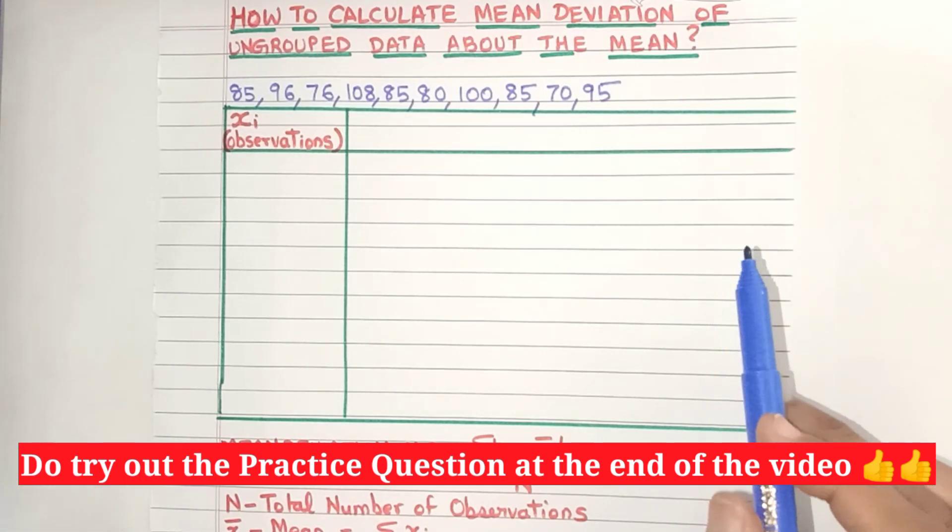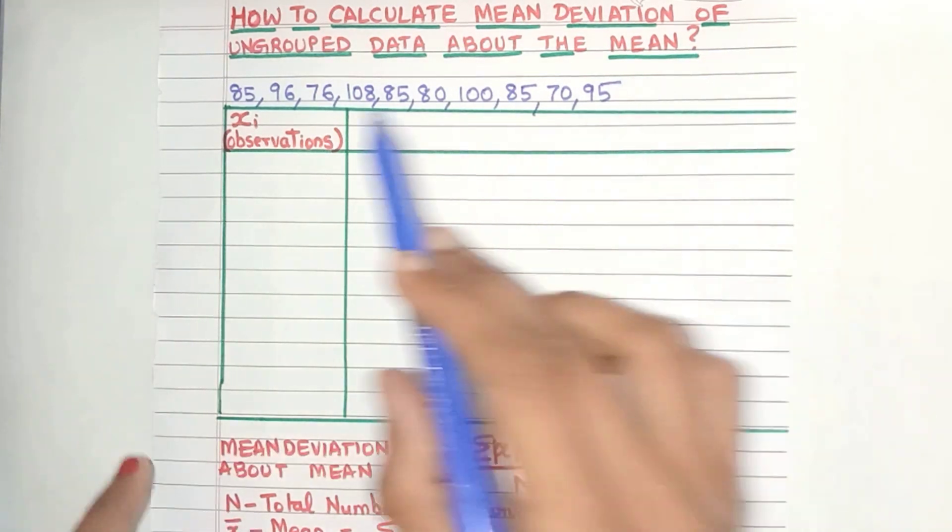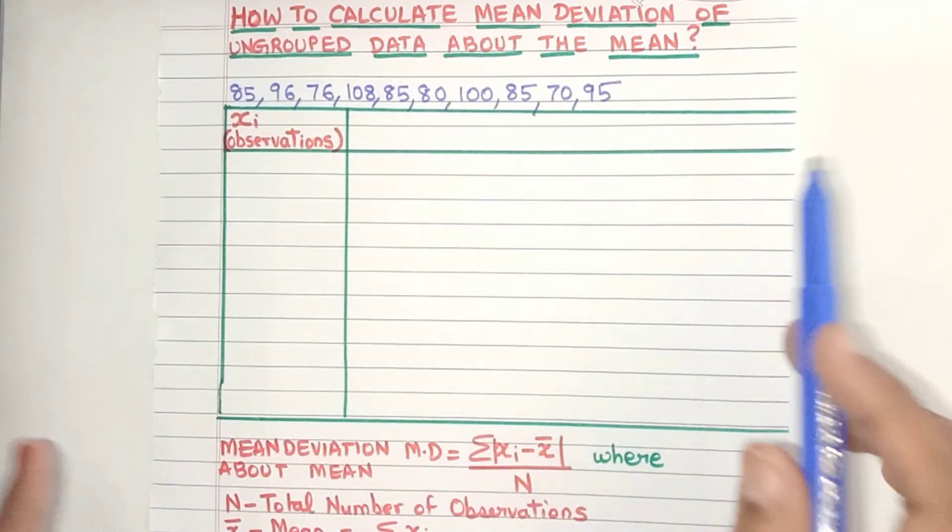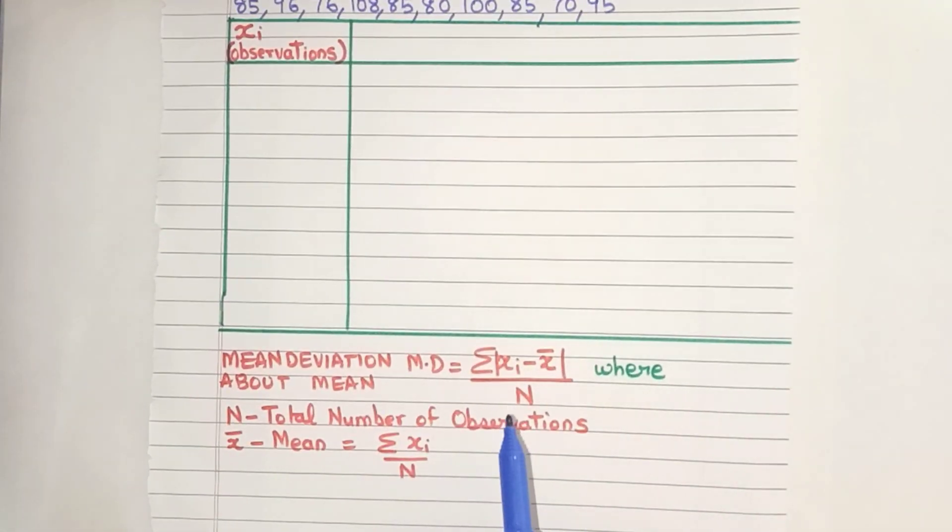Hello everyone. Today let's learn how to calculate the mean deviation of ungrouped data about the mean value. In this example, here are the observations. As you can see, this is ungrouped data. Now the formula for mean deviation is this.